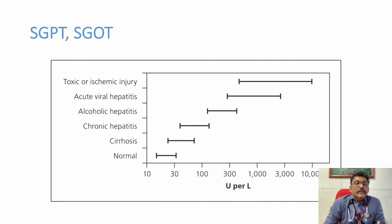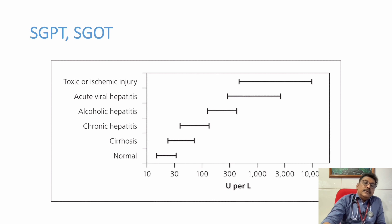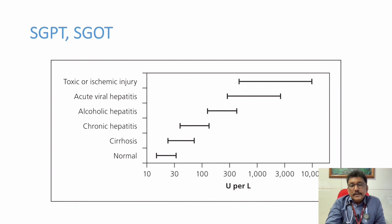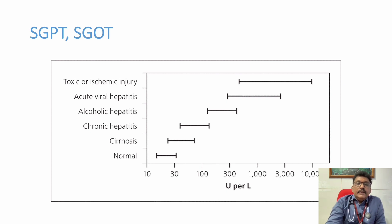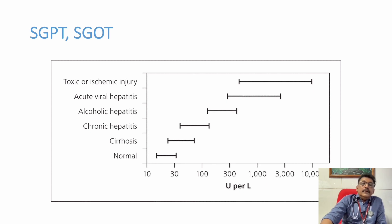Severe alcoholic hepatitis can sometimes produce SGOT and SGPT elevation in the thousands. Remember, in all other hepatitis SGPT is elevated more than SGOT. But in alcoholic liver disease, SGOT is mostly elevated more than SGPT — not always, but in many patients you can observe this.